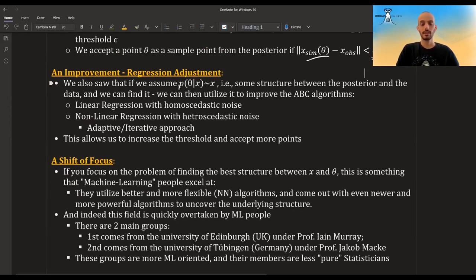And we also saw that if we assume some structure between x and the posterior, then we can utilize it in order to improve the ABC algorithms. So the most basic form was the linear regression one.